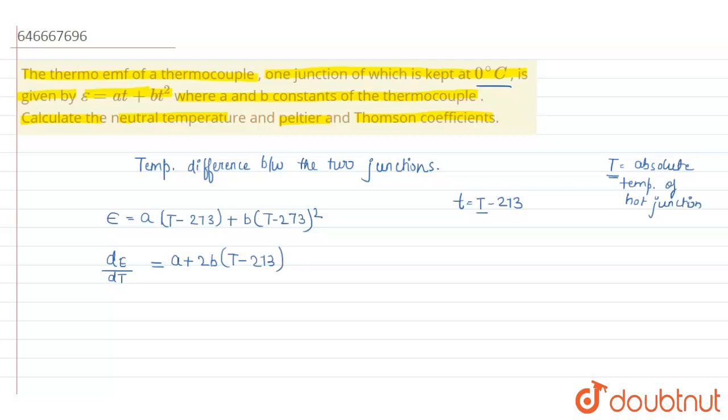Now we know that de upon dt is zero when we have to calculate the maximum thermo emf. So de upon dt is equal to zero. Now the equation will be: